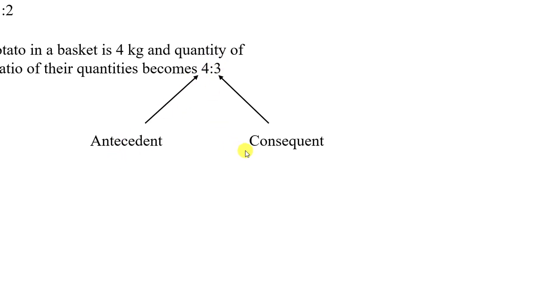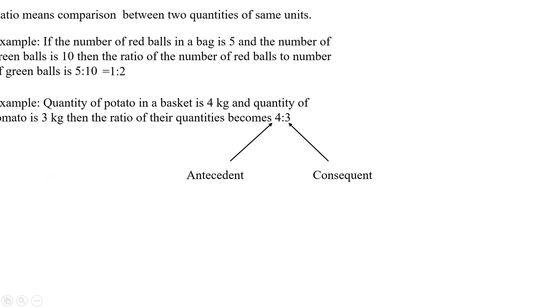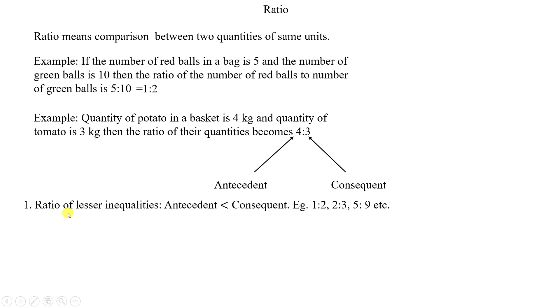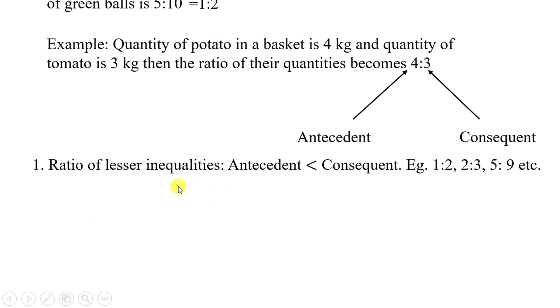1 is the one. 1 is the ratio of lesser inequalities. This is the ratio of lesser inequalities. In this, the antecedent is always less than consequent. Antecedent, consequent. Just for example 1:2, 2:3, 5:9 etc.